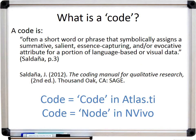Saldana, a respected qualitative researcher, describes a code as often a short word or phrase that symbolically assigns a summative, salient, essence-capturing, and/or evocative attribute for a portion of language-based or visual data. In Atlas TI, you use the code feature to make codes, but in NVivo you use the node feature to create codes.